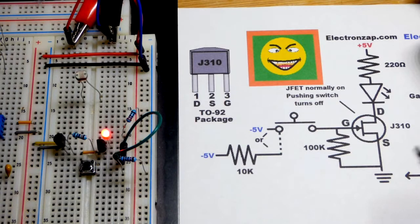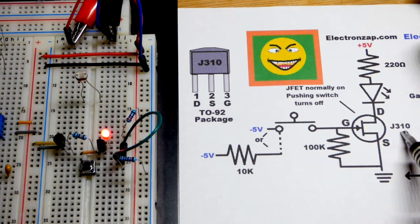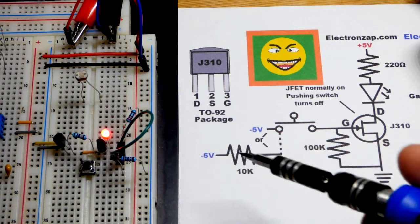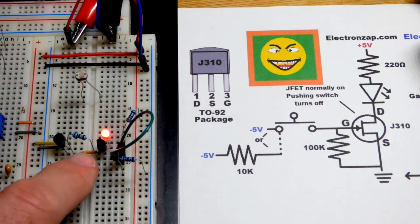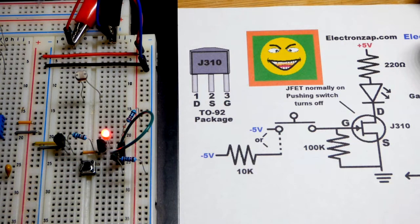In this video we're going to look at using a JFET as a switch. We're going to use the J310 and right now the switch is on. It's actually normally on and when we give a negative signal to ground you can see that the transistor turned off and the LED turned off. So we'll look at this circuit closer.